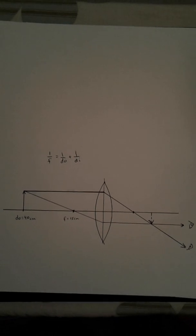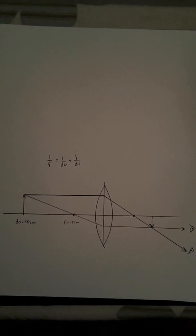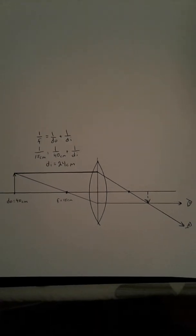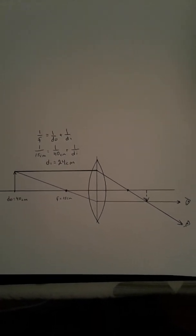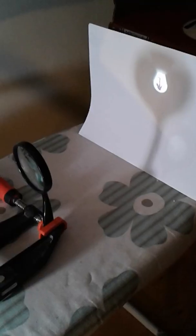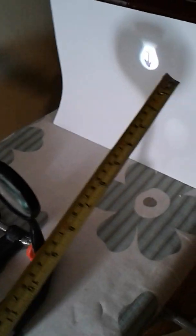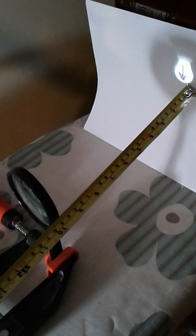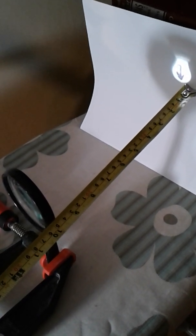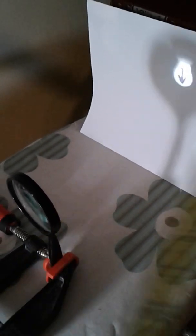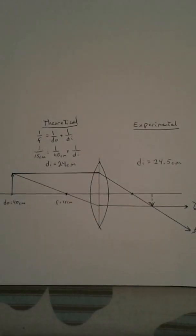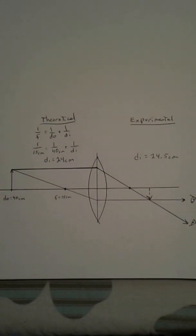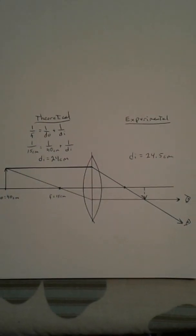Let's use the formula to calculate the distance to the image. We get 24 centimeters for a theoretical value. Now we measure the distance to the image, the DI, and I get about 24 centimeters as well, maybe a little closer to 25. So I put down 24.5 centimeters for the experimental. It's a pretty close fit.